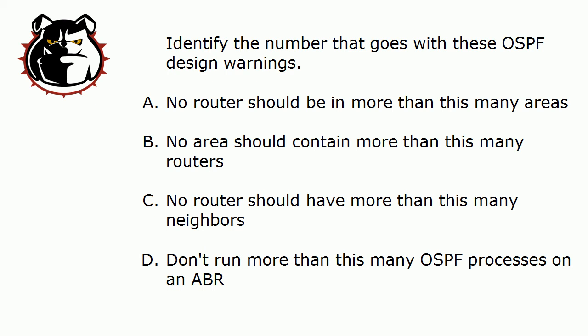If you want to pause the video for a moment, go right ahead, but we're going to head straight into the answers. Cisco recommends that no router be in more than three OSPF areas — that's the answer for A. No area should contain more than 50 routers. No router in turn should have more than 60 neighbors. And you really shouldn't run more than one OSPF process on an area border router, because that database really grows quickly when you're an ABR, and there's a lot of overhead associated with it.